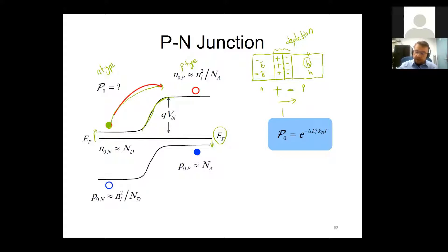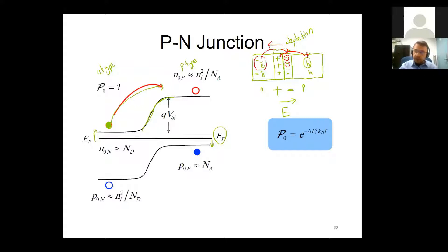This creates a capacitor-like structure with positive charges on one side and negative on the other, forming an electric field. This field acts like a barrier — whenever an electron from the n-side tries to jump to the p-side to conduct, it gets repelled back by the ionized atoms. Similarly, holes are stopped. So the probability of conduction decays exponentially with increasing potential barrier.